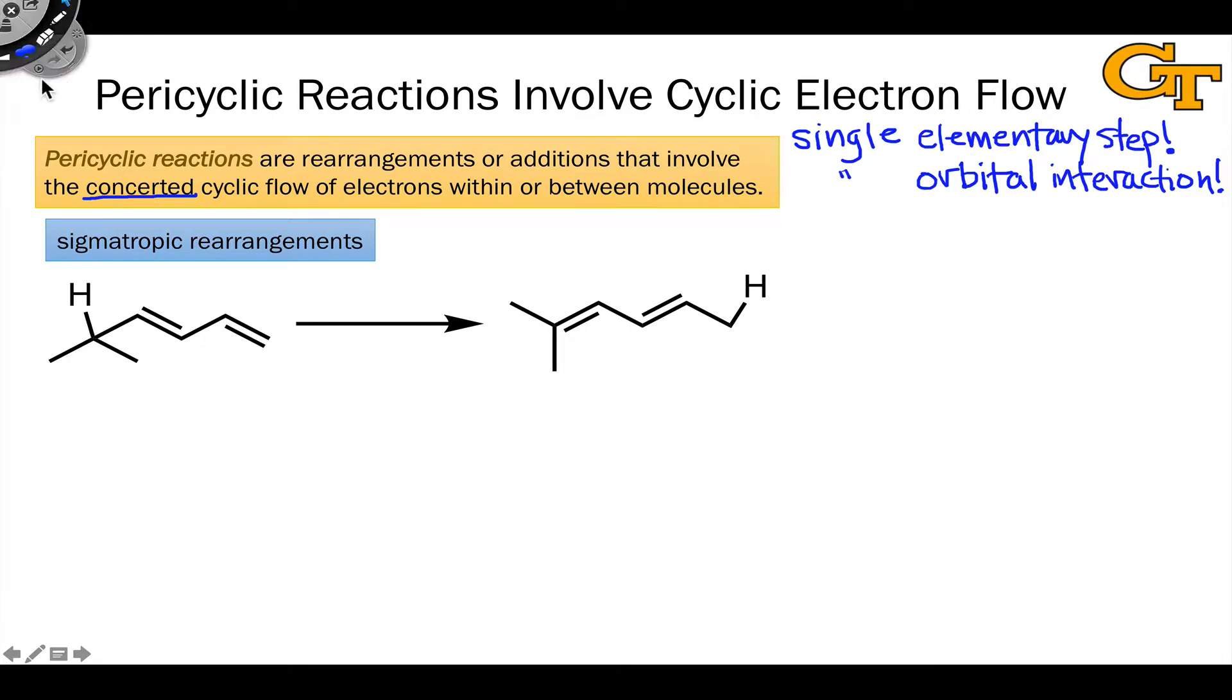The first are what are called sigmatropic rearrangements. In this class of reactions, a sigma bond migrates across a pi system. The hydrogen and its pair of electrons migrates across the pi system, and the double bonds shift to accommodate movement of the CH bond. And so electron flow is cyclic.